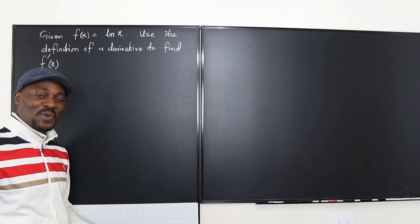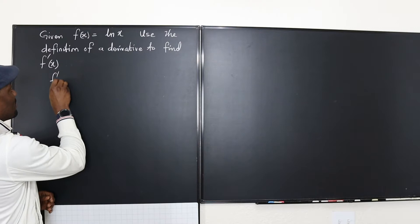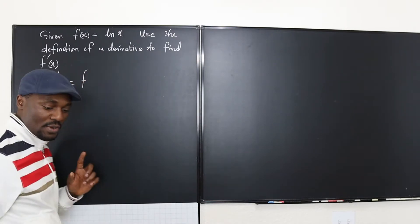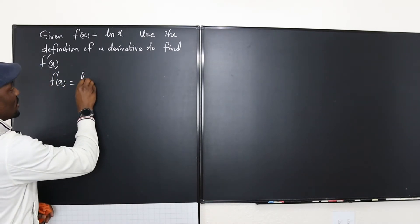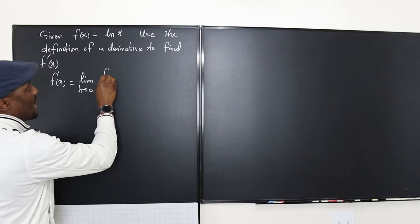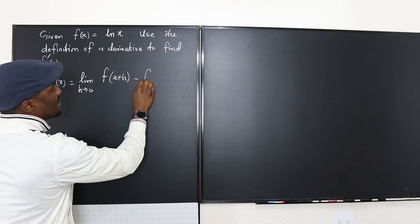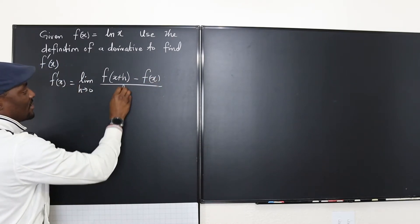As usual I'm going to start with the definition of a derivative which is f prime of x is equal to the limit. We have to always write the limit. It's equal to the limit as h goes to zero of f of x plus h minus f of x divided by h.